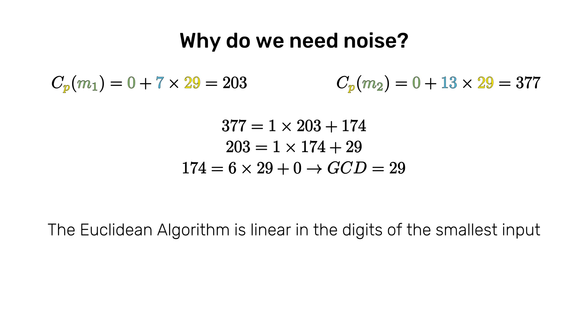If we add noise, the problem becomes much more difficult, and in the literature it is known as the approximate GCD or approximate common divisor problem, and with reasonable parameters, it is considered to be hard to solve.